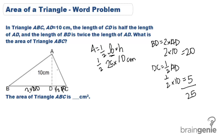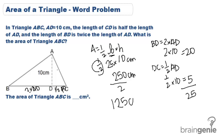25 times 10 is 250 cm, and then we take half of that to get 125 cm squared as the entire area for triangle ABC.